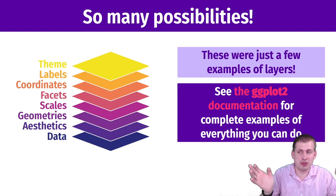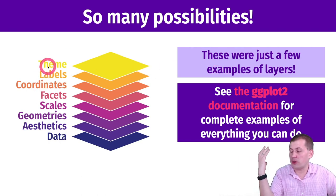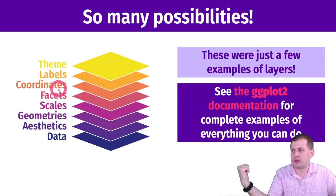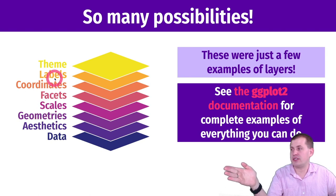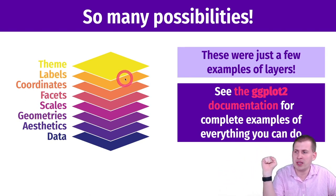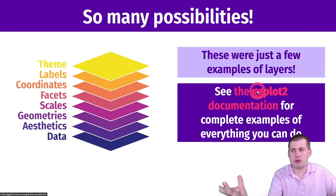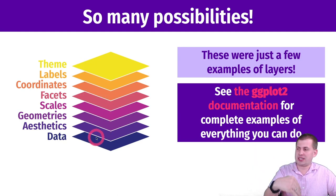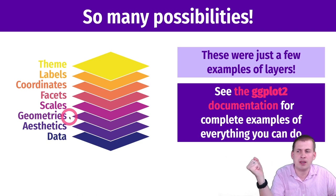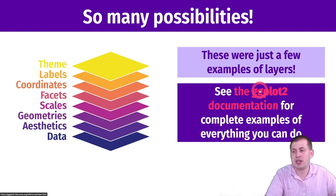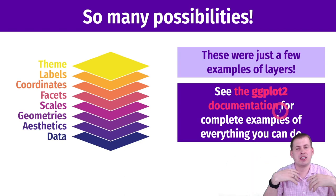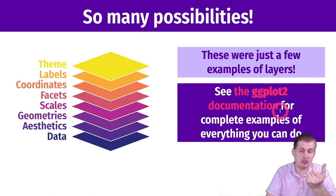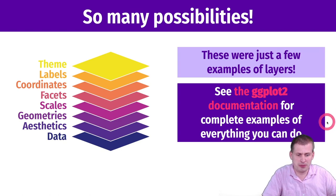So we explored these main core layers for ggplot: themes, labels, coordinates, facets, scales, geometries, aesthetics, and data. There are tons of different types within each category, and we'll cover them throughout the semester. The ggplot documentation is organized around these layers with sections for aesthetics, geometries, scales, and more. Clicking on any geom shows code examples — like ten different box plot examples with code — which is really convenient.